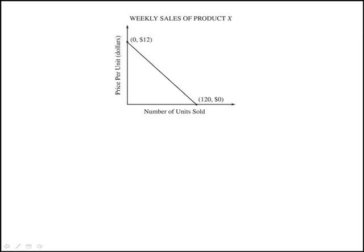We're told that based on past sales, a convenience store has observed a linear relationship between the number of units of Product X that will be sold and the price per unit.